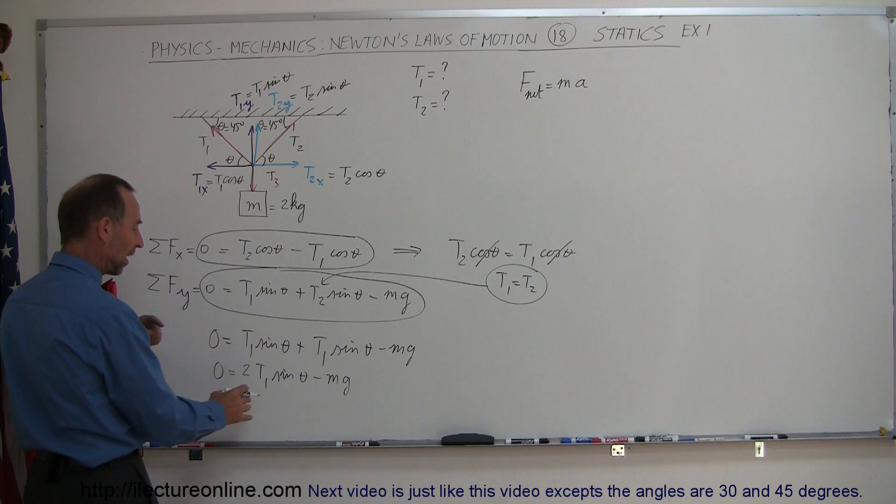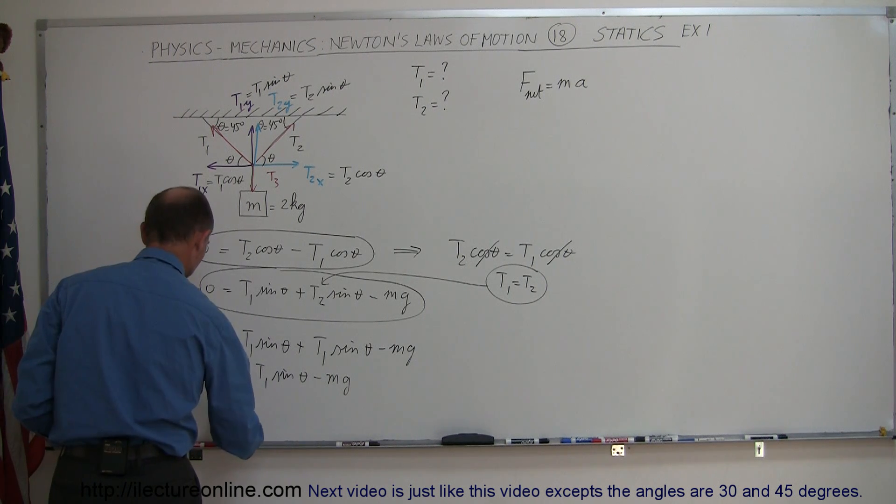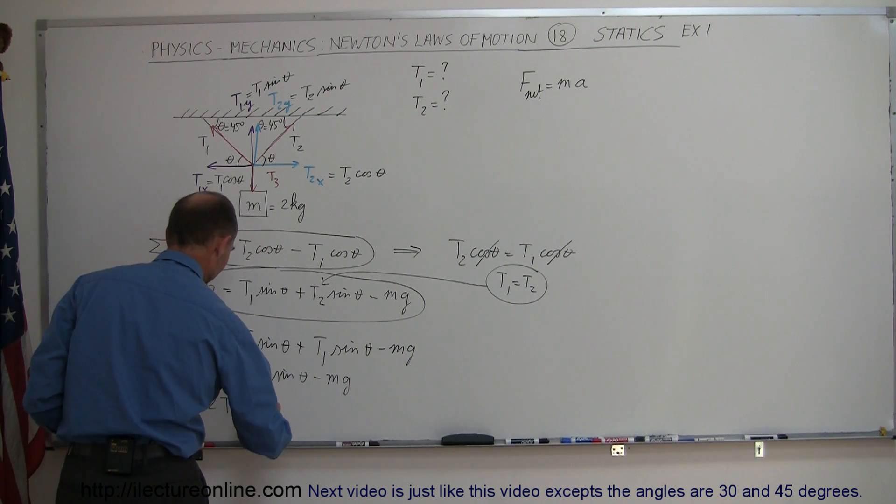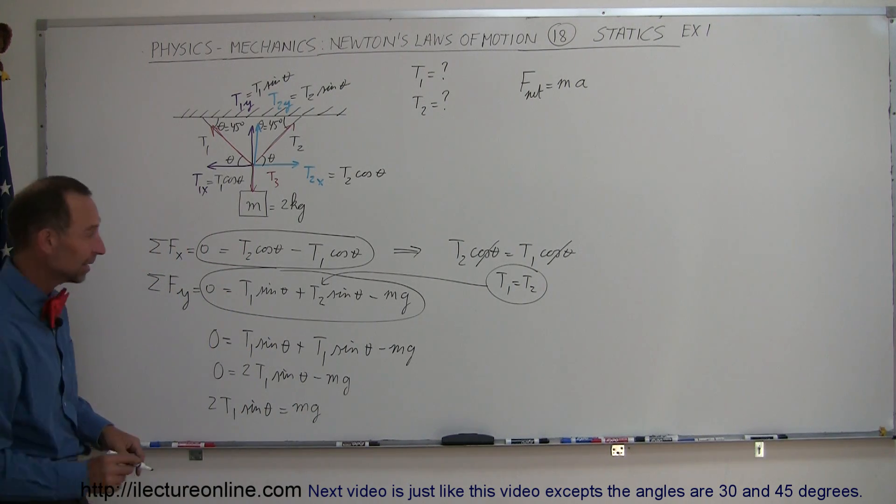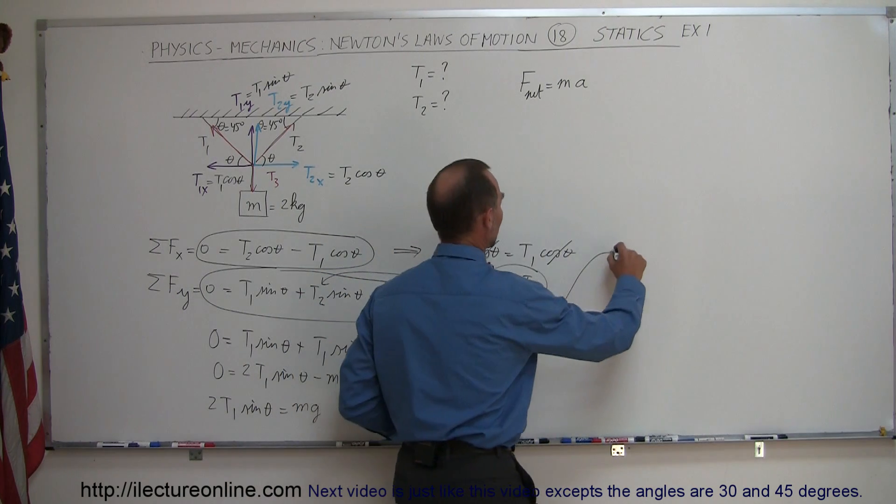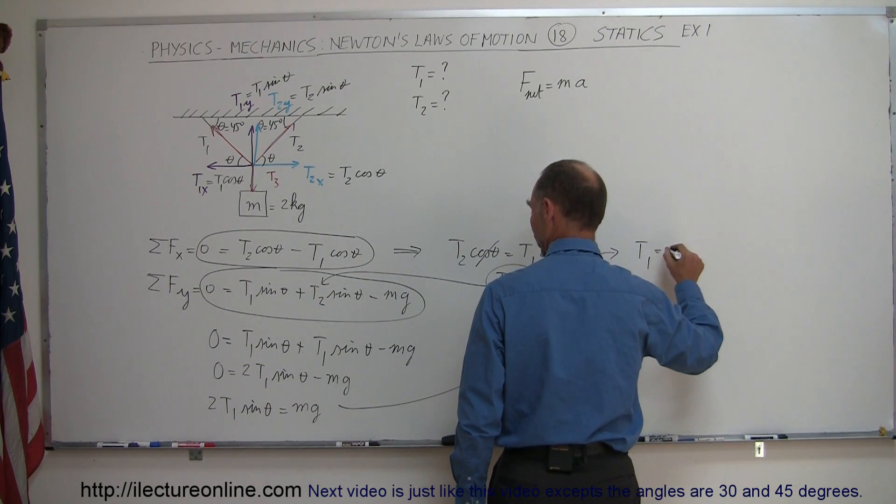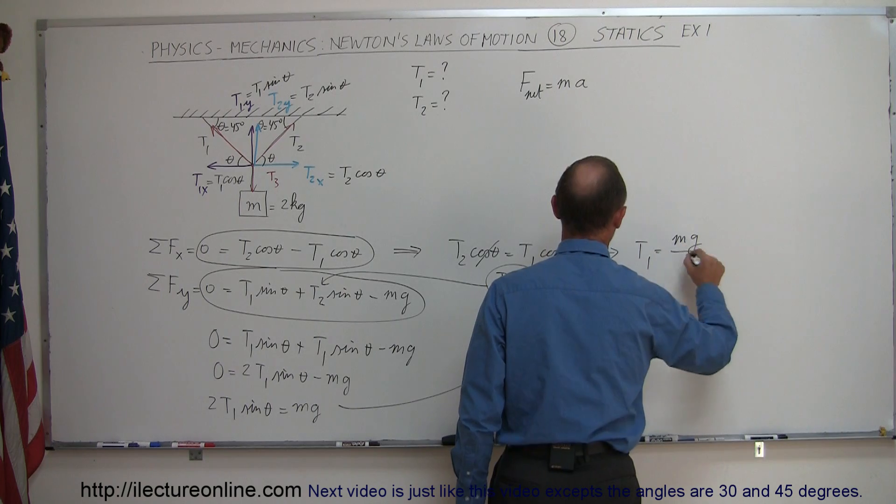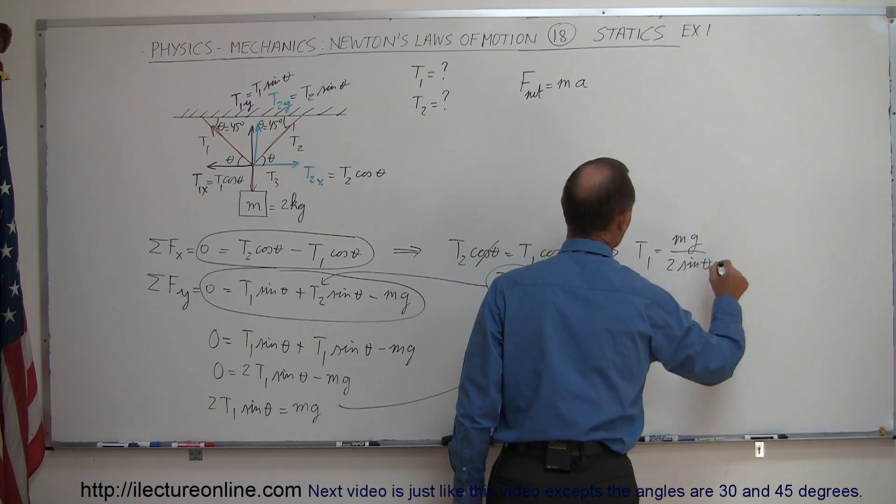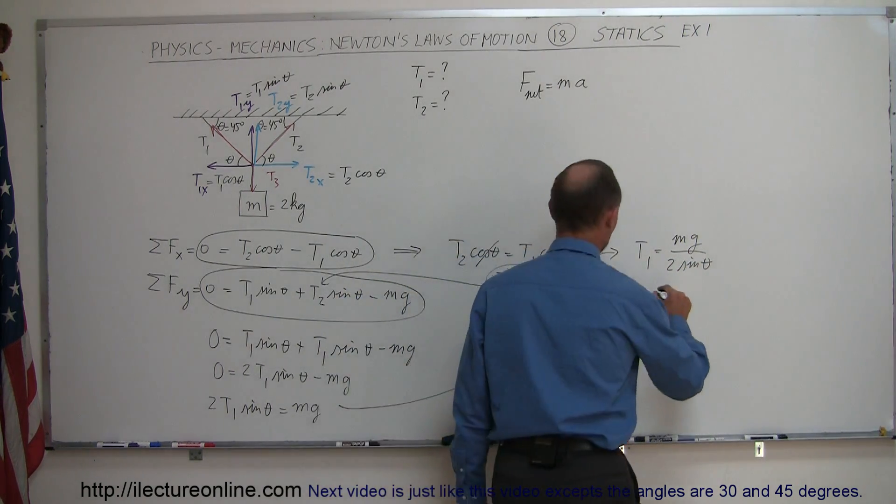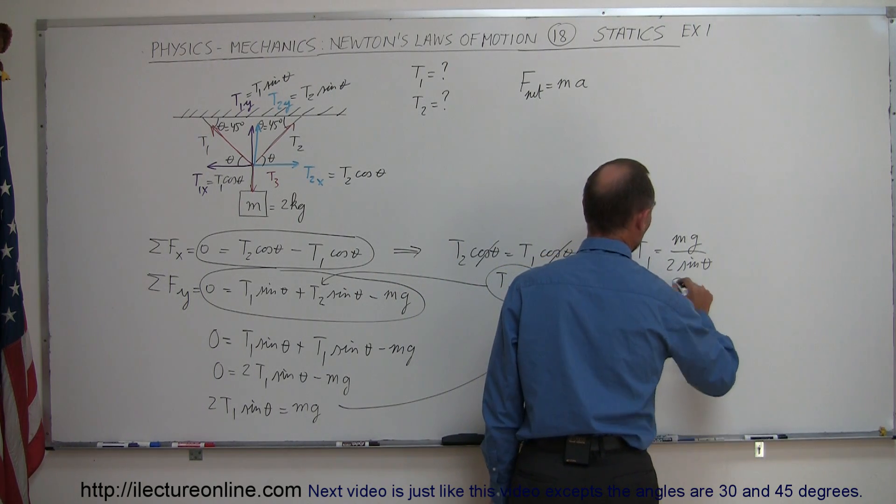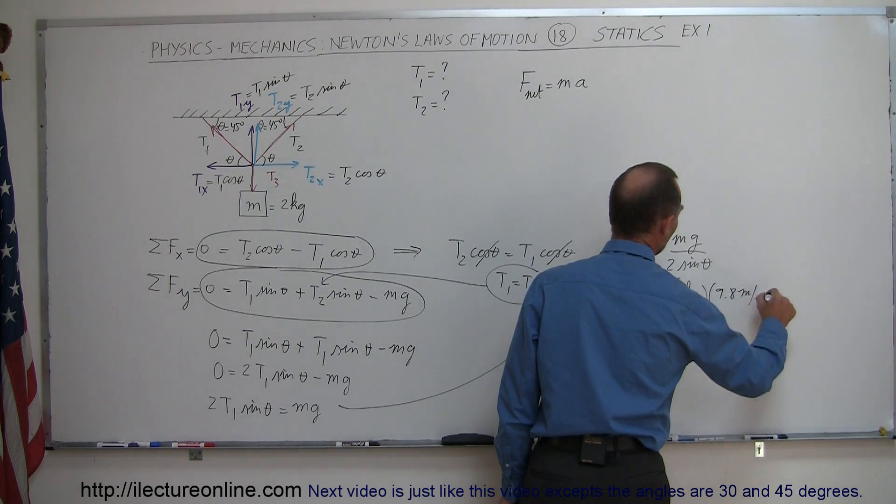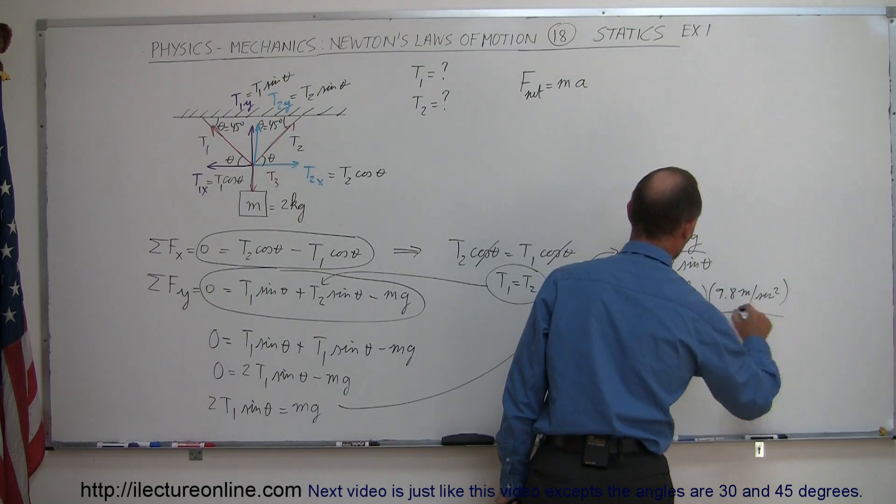I can take the mg to the other side, switch the equation around, so 2 times T1 sine of theta equals mg, and then I divide both sides by 2 times the sine of theta, which gives me T1, which equals mg divided by 2 times the sine of theta. Now I can plug in all the numbers that I know. The mass was 2 kilograms, g is 9.8 meters per second squared, divided by 2 times the sine of 45 degrees.